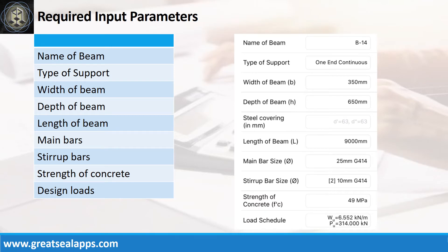Input parameters required: name of beam B14, type of support WALL and CONTINUOUS, width of beam 350 mm, depth of beam 650 mm, length of beam 9000 mm, main bars 25 mm bar at grade 414, stirrup bars 10 mm bar at grade 414, strength of concrete 49 MPa, factored uniform load 6.552 kN per meter, and factored concentrated load 314 kN.